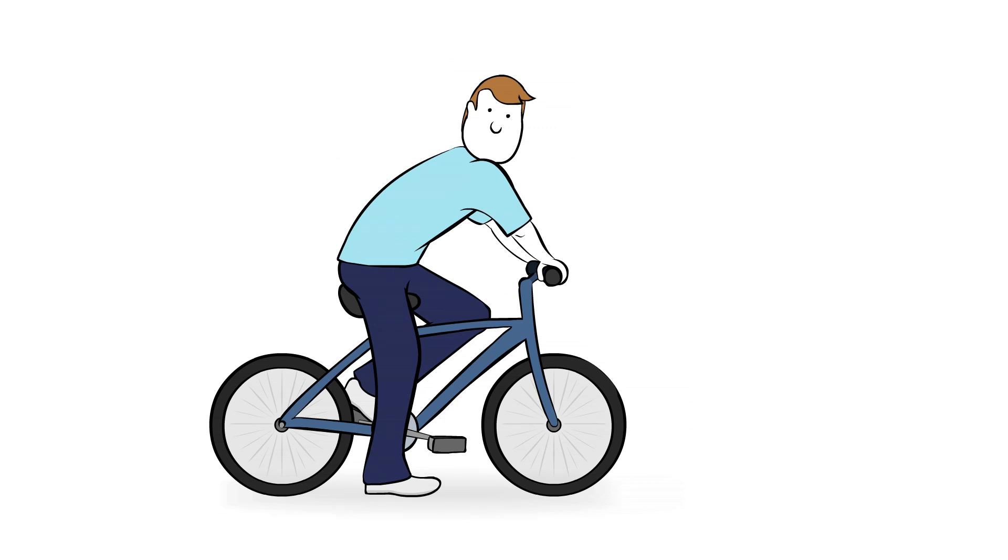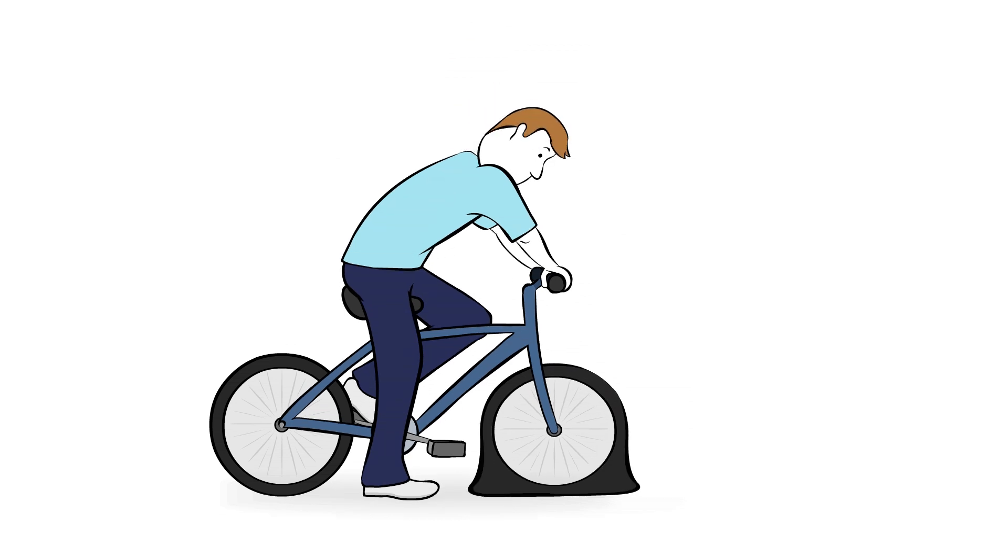To understand why, think of your disc as a bicycle tire and tube. Cutting out a bulging disc is like sanding down a bump on the tire caused by a weak sidewall. It reduces the size of the bulge, but the tire becomes more likely to fail, just like surgically removing a disc bulge makes the disc more likely to fail.